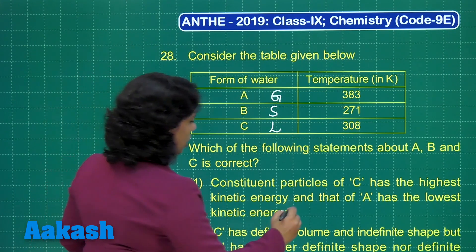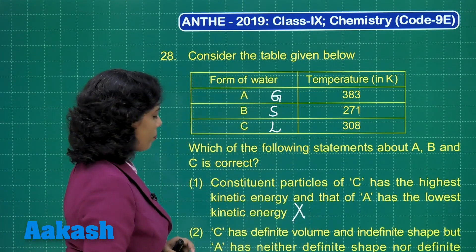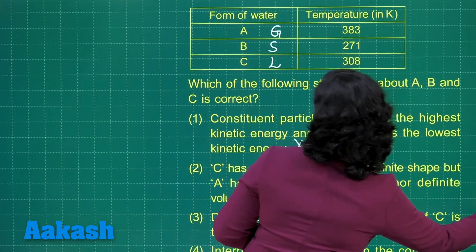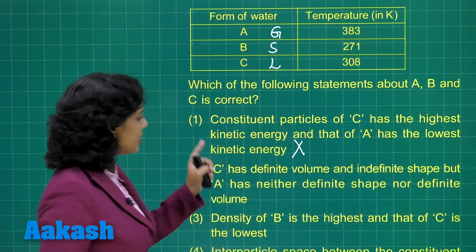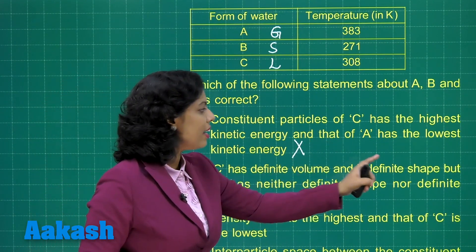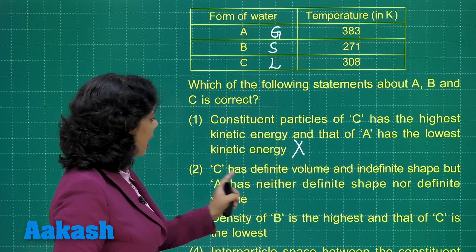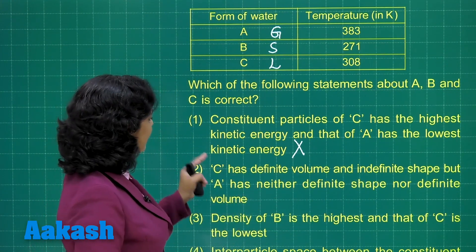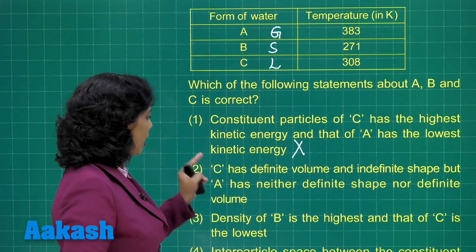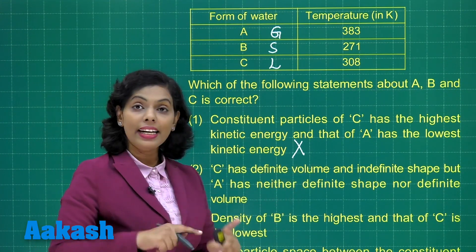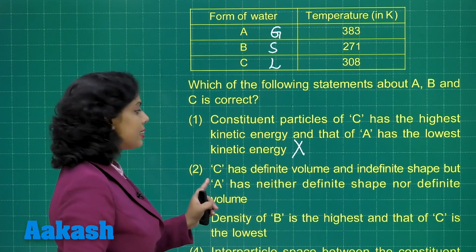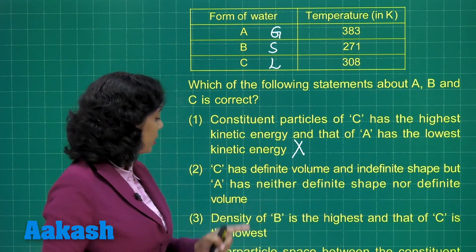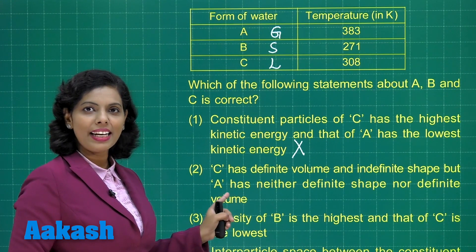That's why you need to mark a cross here. The next option states that C has definite volume and indefinite shape, and A has neither definite shape nor definite volume. A is gas and C is liquid. Liquid has definite volume but indefinite shape. Similarly, A is gas, so it does not have definite shape nor definite volume. This statement is correct.